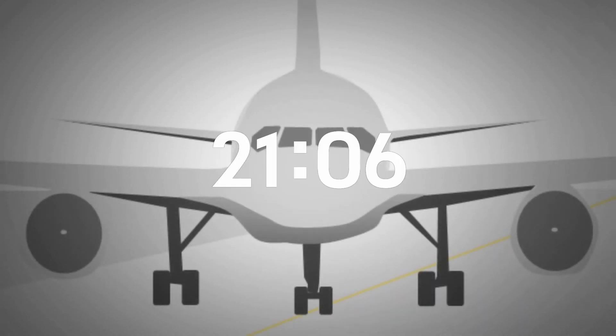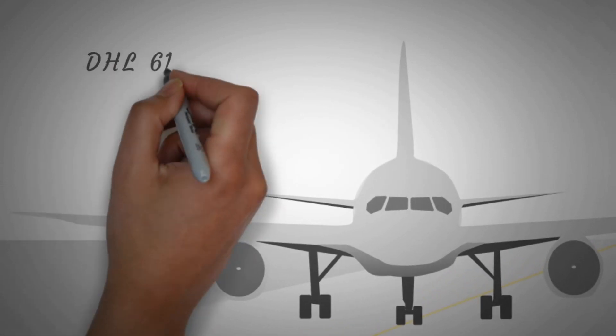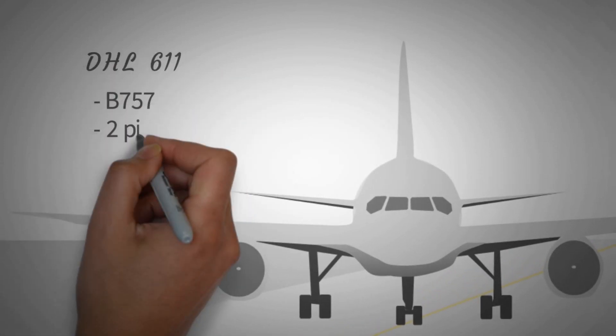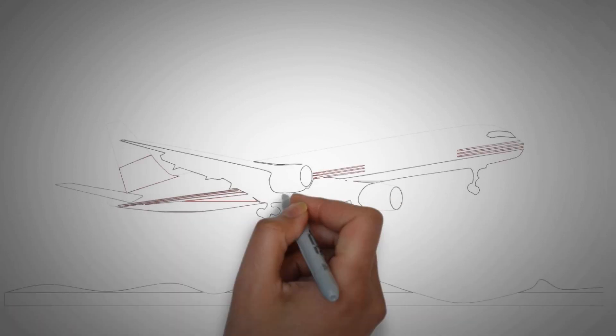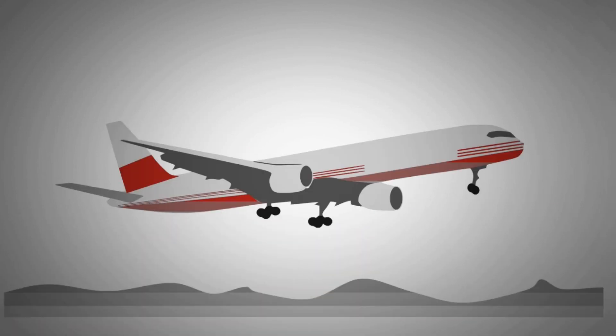The DHL-611 Boeing 757 Type, with two pilots aboard, departed from Bergamo, Italy, and was heading for Brussels, Belgium.